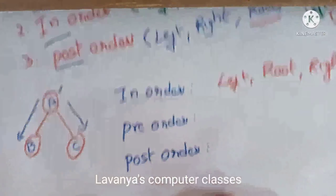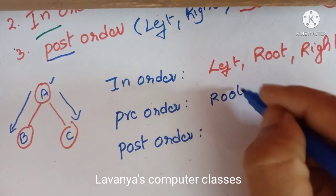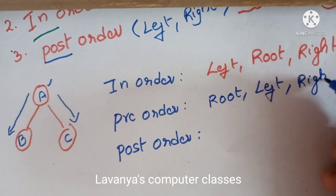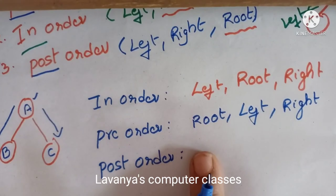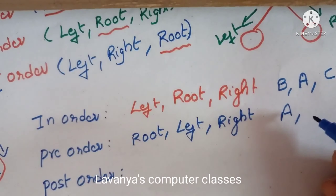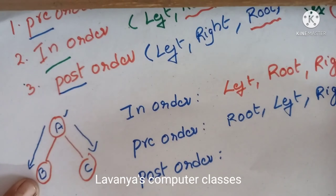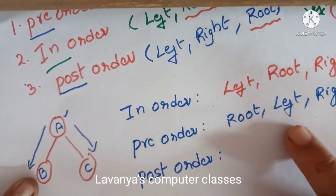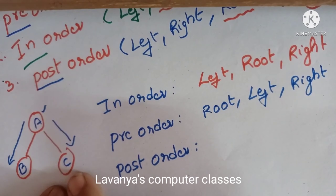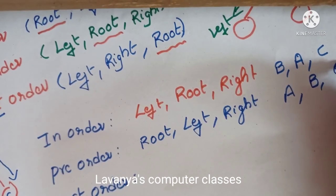Now for pre-order: pre means first, so root comes first. The root is A, so write A first. Then go to the left-hand side, which is B. Then go to the right-hand side, which is C. So pre-order traversal gives A, B, C.